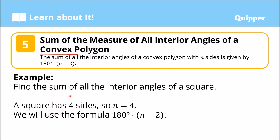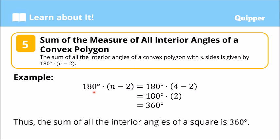Example: Find the sum of all the interior angles of a square. A square has 4 sides, so n equals 4. We will use the formula: 180 degrees times (n minus 2). That gives us 180 degrees times (4 minus 2) equals 180 degrees times 2, which equals 360 degrees. Therefore, the sum of all the interior angles of a square is 360 degrees.